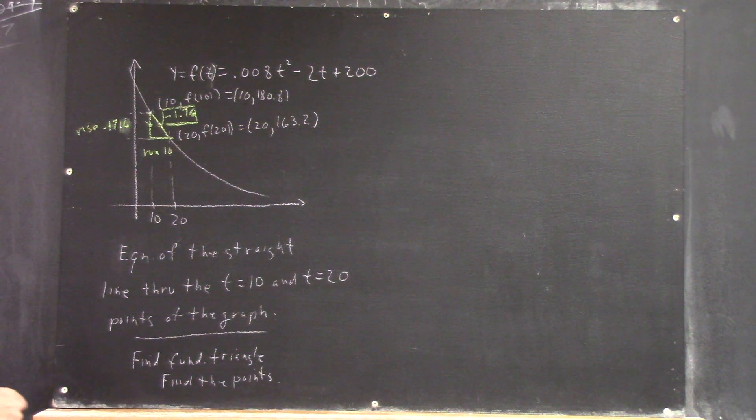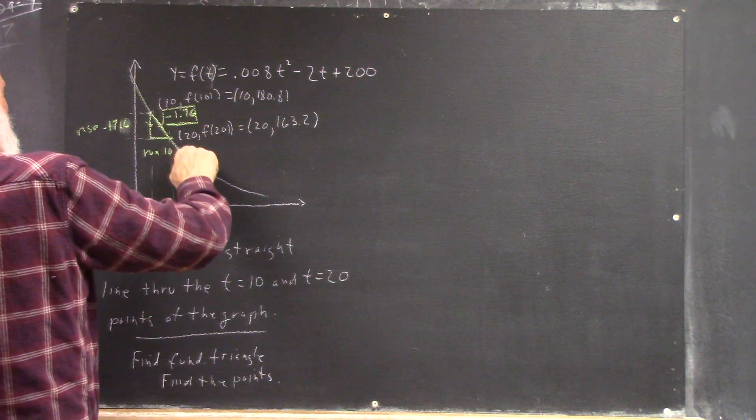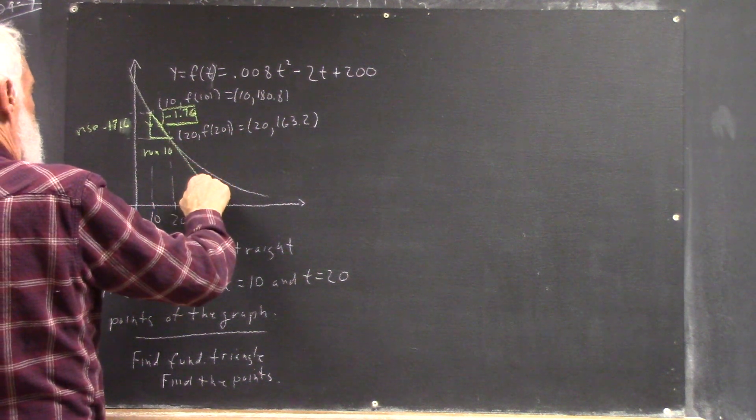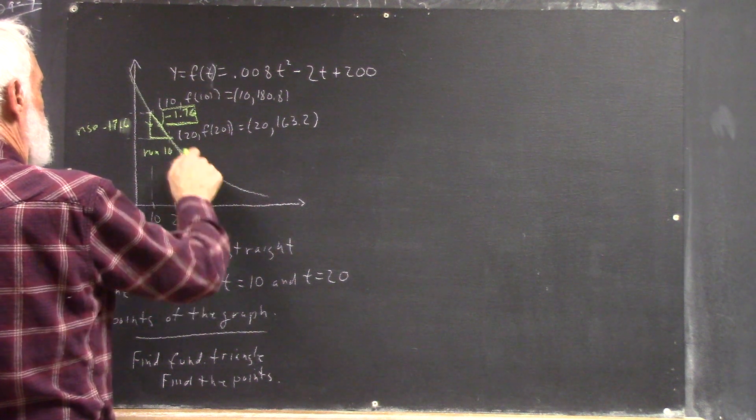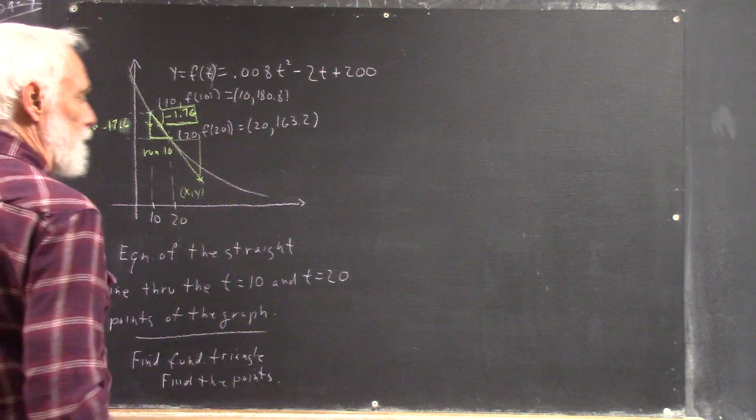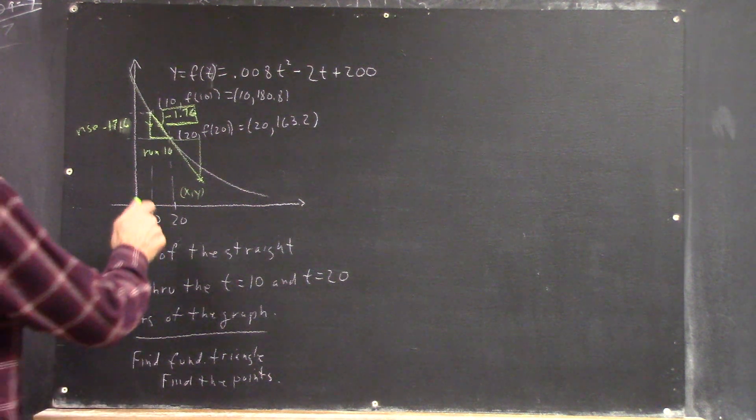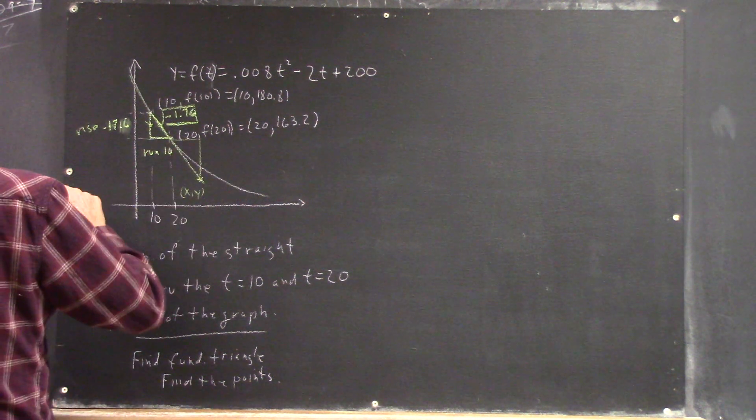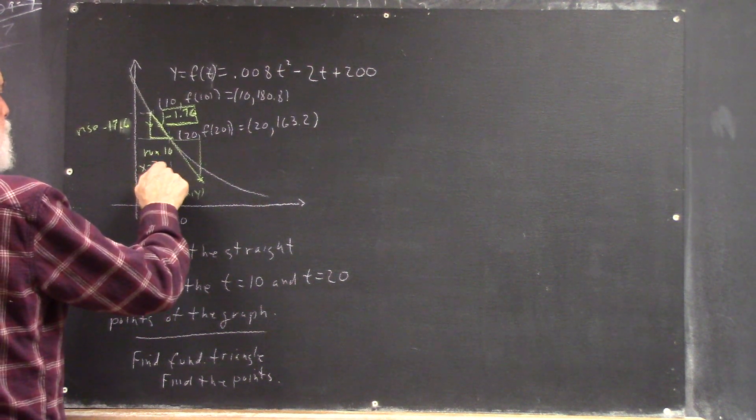Now that we've got all that information, we might as well extend this line down to a point (x, y) and construct this fundamental triangle, which will have a slope of... I've labeled the thing, but we're out of time.